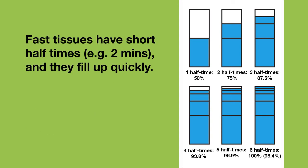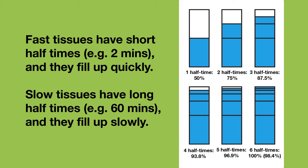Now remember slow and fast tissues? Fast tissues have low half times — say two minutes — so they fill up quickly. And slow tissues have high half times — say 60 minutes — so they fill up slowly.